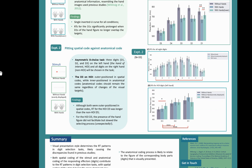To do this, we introduced an asymmetric 8-choice task, where the thumb, the index finger, and the middle finger on the left hand and all digits on the right hand would be potentially chosen in this task. In this case, the spatial code for the left middle finger will be in the outer position, while its anatomical code remains in the inner position.